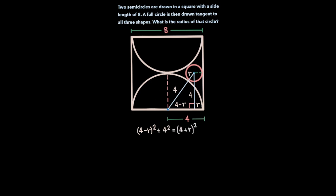Now let's expand these squared terms. (4-r)² is 16 - 8r + r² plus 4² which is 16 equals (4+r)² which is 16 + 8r + r².